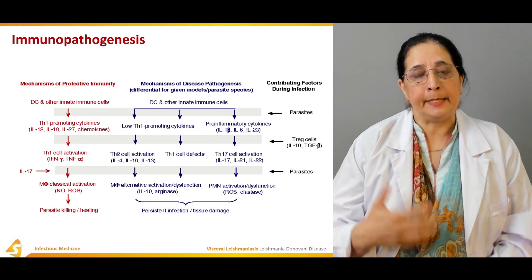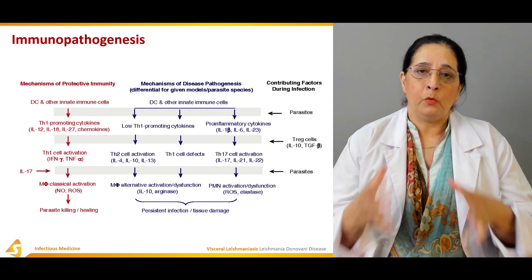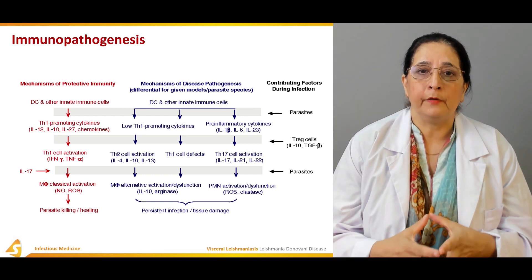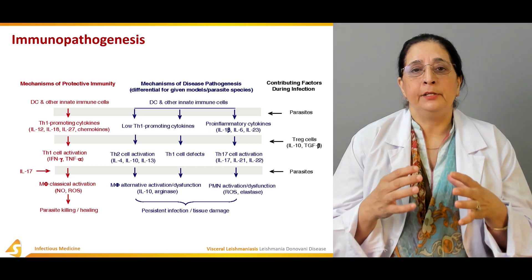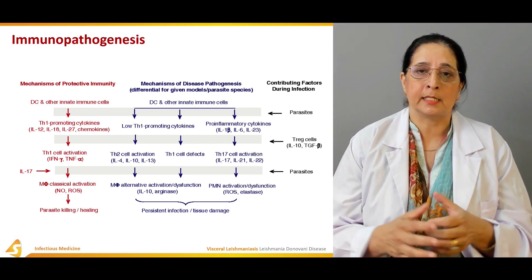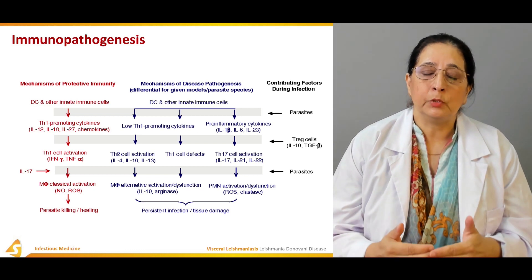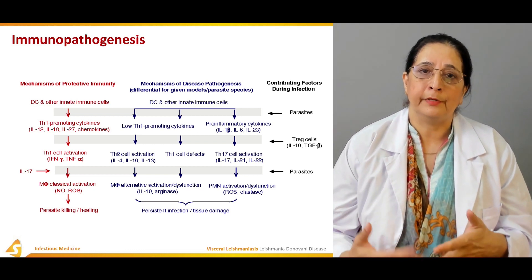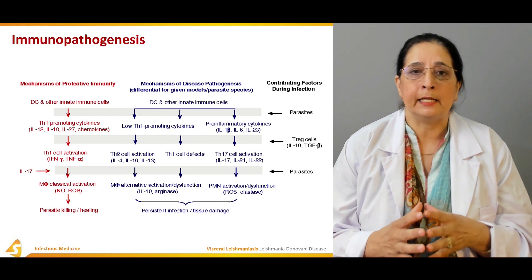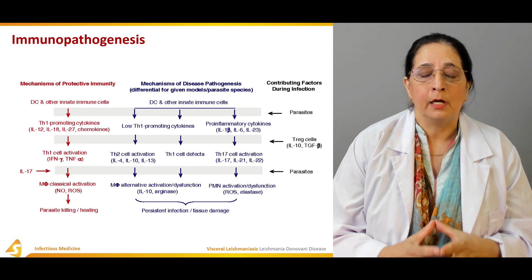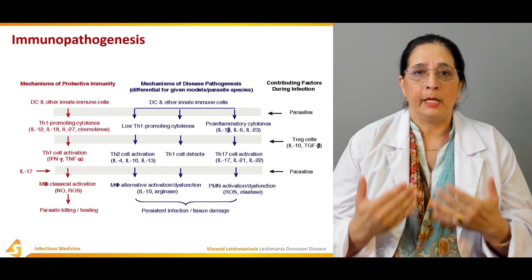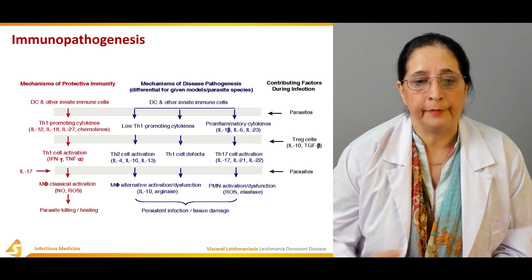Next is immunopathogenesis — the immune system's response to infection. Once infection occurs, an inflammatory process takes place. During this process, different cells are activated and cytokines are released. These cytokines cause production of inflammatory mediators including interleukins, tumor necrosis factor, and interferon.